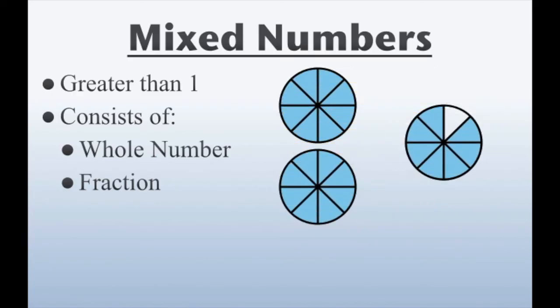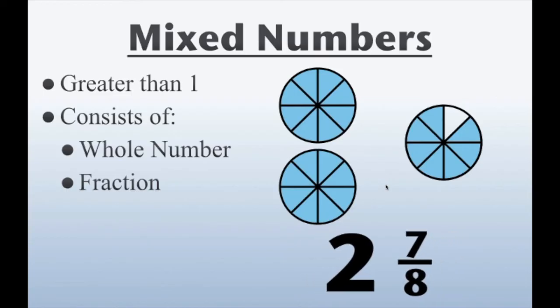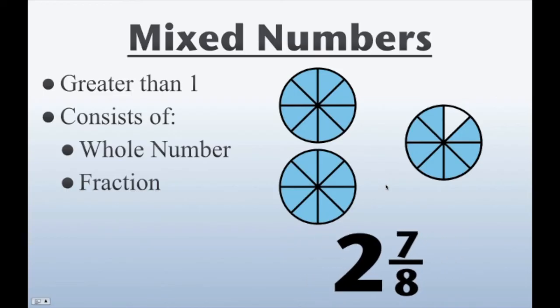How about here? Here we have a whole that consists of 8 pieces. Here we have the same thing, but they're both completely filled, which makes them 2 wholes. This here, again, has 8 pieces in it, but only 7 are shaded, so that is 7 eighths. Which makes this whole value, as a mixed number, 2 and 7 eighths.